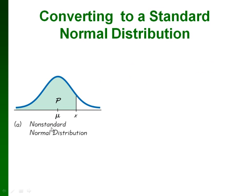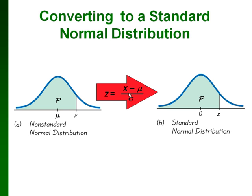So here's our picture. If we have a non-standard normal distribution, notice we still have that same bell curve. But in this case, in the middle of our curve is our mean and our x value. So we're going to convert using that formula.